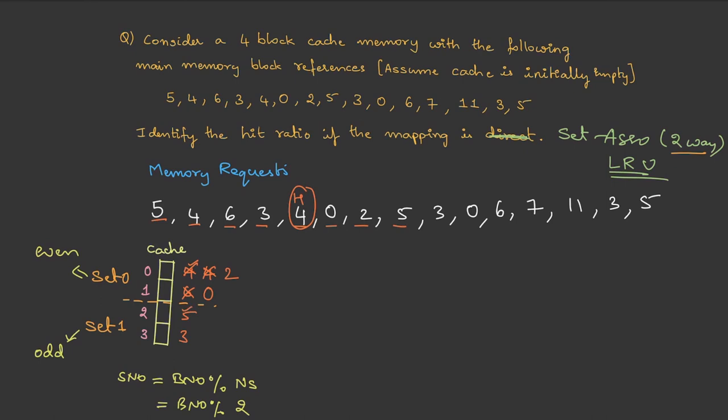Then five. Five is available, therefore this is a hit. Because it is accessed, let's move it to the right. Then we have three, three is again available, it's a hit. Let's move it to the right. Then zero.